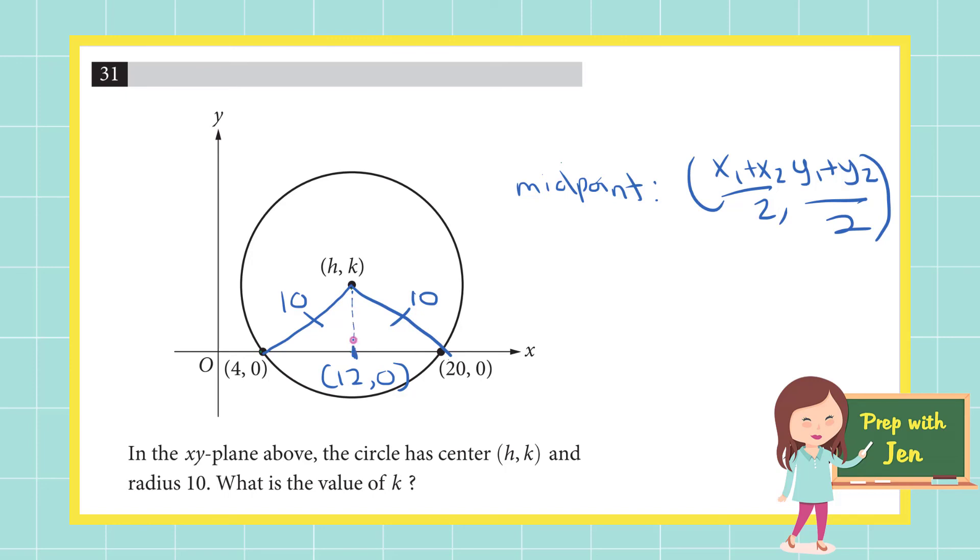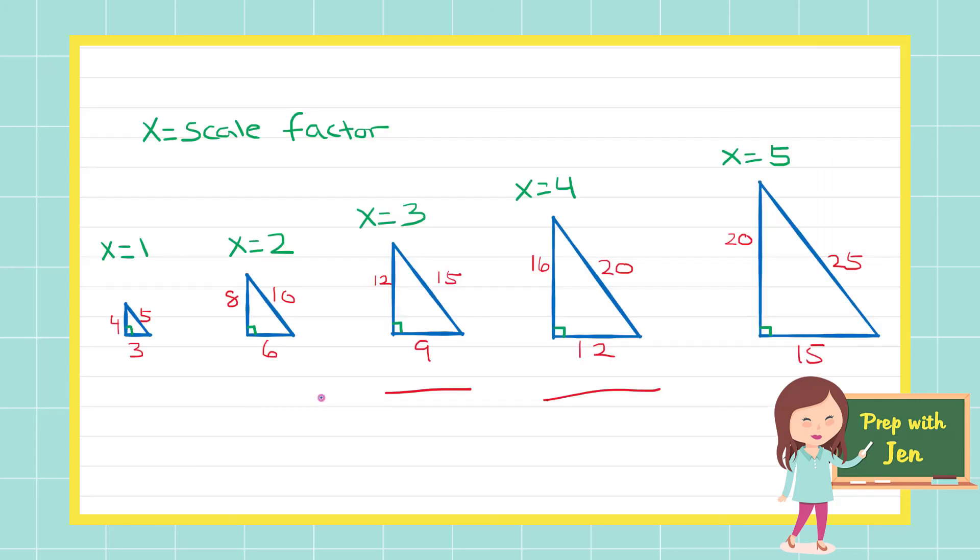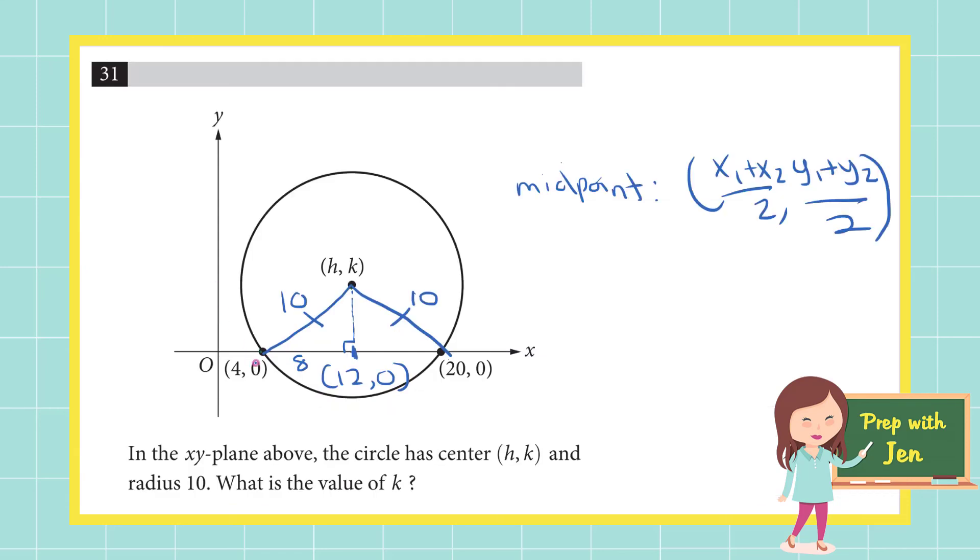Now I'm going to drop a line segment down here giving myself a right triangle. The hypotenuse is 10 and what's this long leg here? 12 minus 4 that would be 8. Again this is going to be a 3-4-5 triangle relationship. Coming back here it is this one when x equals 2. The scale factor is 2. So what this means is my k, my short leg here the height, has to be 6. So k is equal to 6 and there you have it.